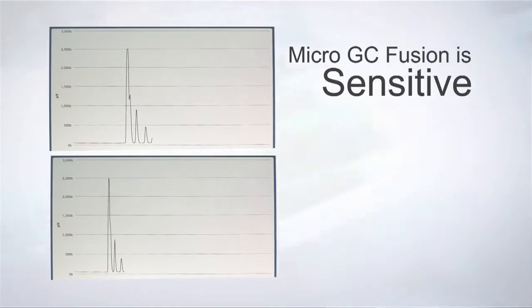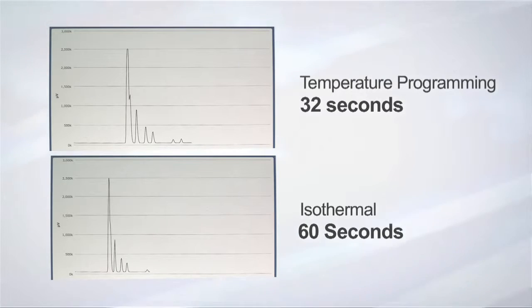Micro GC Fusion is sensitive. In natural gas analysis, temperature programming sharpens and intensifies peak heights when compared to an isothermal run and also cuts the analysis time in half.